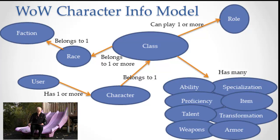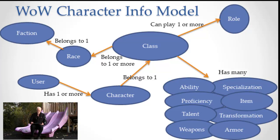A class plays a certain role: the tank, the healer, or the damage dealer — those are the different roles a class can play in battle. That class belongs to a race and the race belongs to a faction. The character belongs to one class, and a user — that's you, the player, the person who pays for World of Warcraft — has one or more characters. Each character belongs to a class, which belongs to a race, which belongs to a faction. That's the setup of the character.